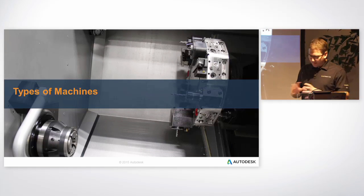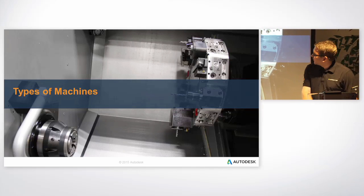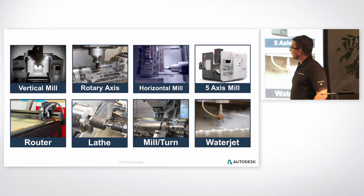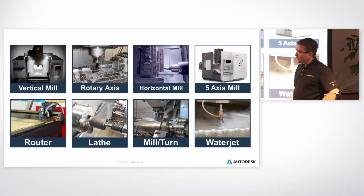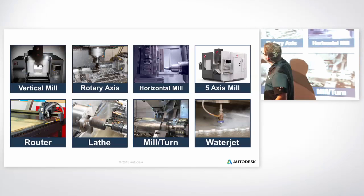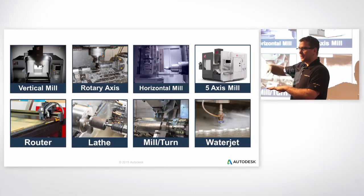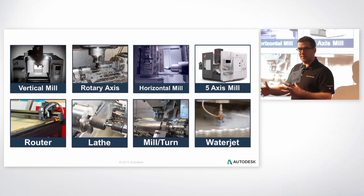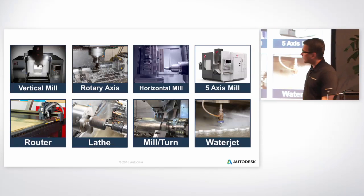We've covered a couple of different types of machining. Looking at the machines themselves — they correlate to the axis types. The most common CNC machine is a vertical mill. Why is it called a vertical mill? The spindle is vertical, and it's typically a three-axis machine. Even though it's a three-axis machine, you could use it for two-and-a-half-axis machining — it's again a limitation of what code we send to the machine. Or you could do surfacing. A vertical mill is the most common type, along with a router.